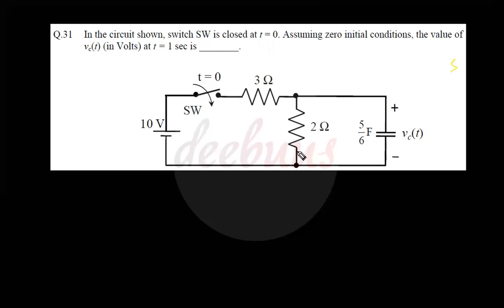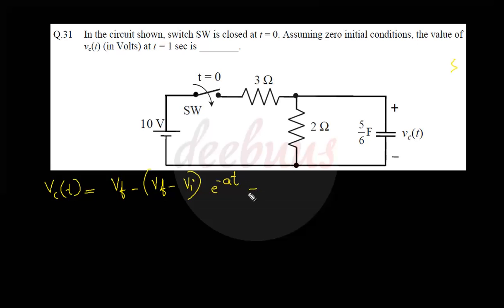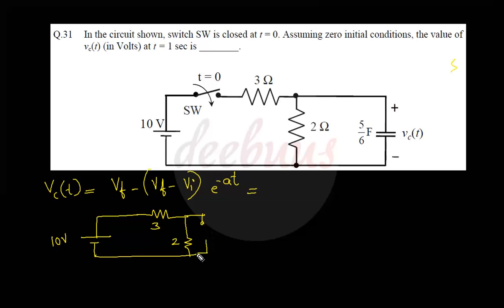Moving to another two-mark question: in the circuit shown, the switch is closed at t = 0 with zero initial conditions. Find V_c(t), the voltage across the capacitor at t = 1 s. Using the charging expression: V_c(t) = V_final − (V_final − V_initial)e^(−at). The final steady-state voltage: capacitor acts as open circuit, so V_final = 10 × 2/(2+3) = 4 V.